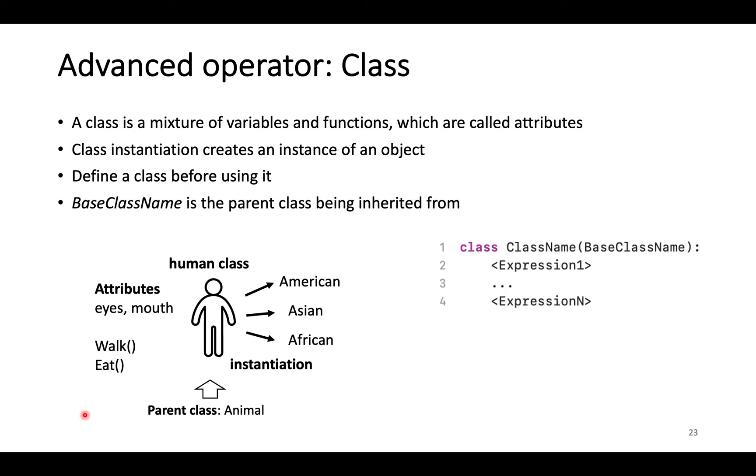Class is a mixture of variables and functions, which are also called attributes. For example, human class has variable attributes like eyes, mouth, and hands, and function attributes such as walk and eat. Python allows creating multiple object instances from the same class. For example, American, Asian, and African are all objects from the human class.